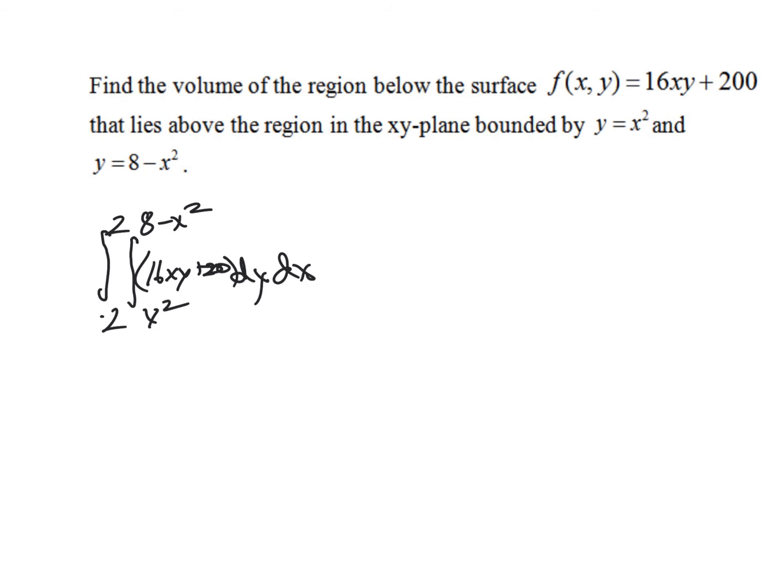Now, to kind of just continue and maybe just reason through, you know, if we're starting with dy, again, that means that we treat x as a constant. So our first piece would be 8xy squared plus 200y. We would evaluate that at 8 minus x squared and x squared.